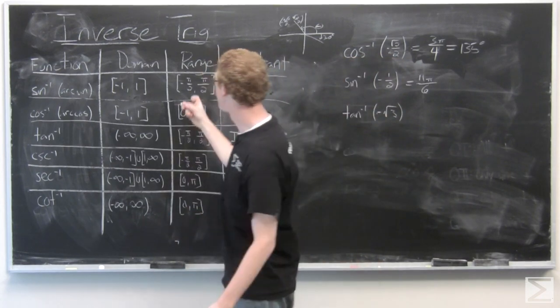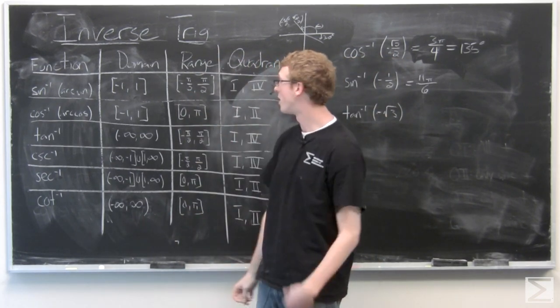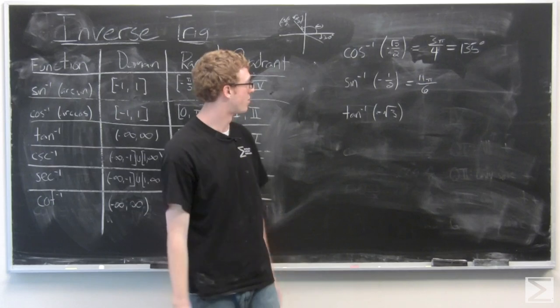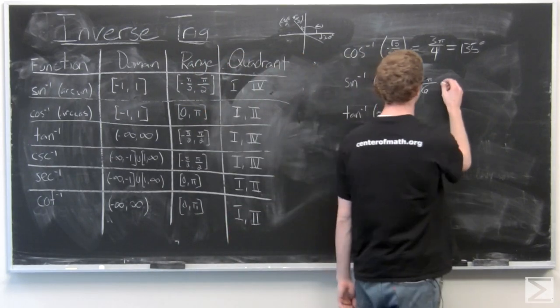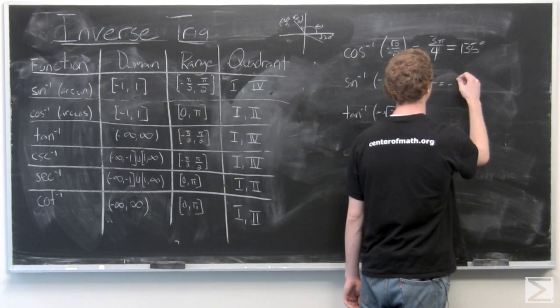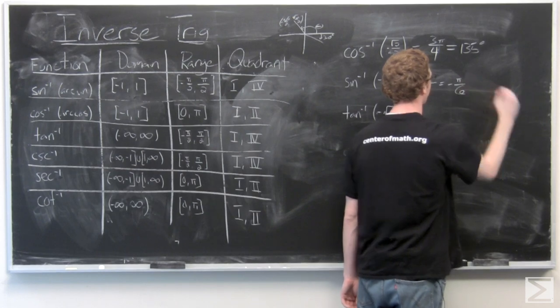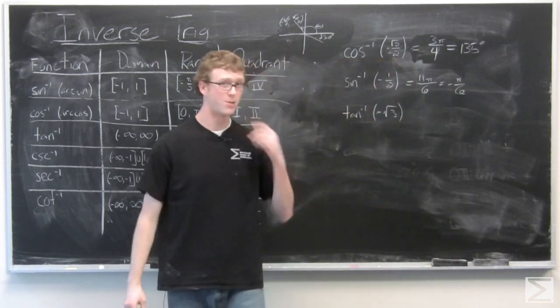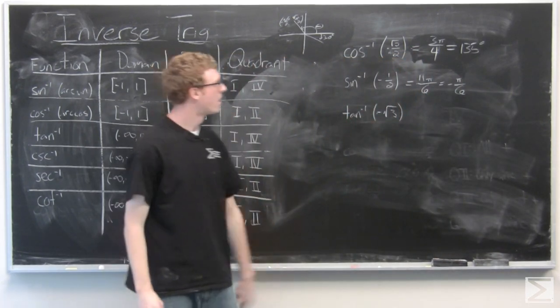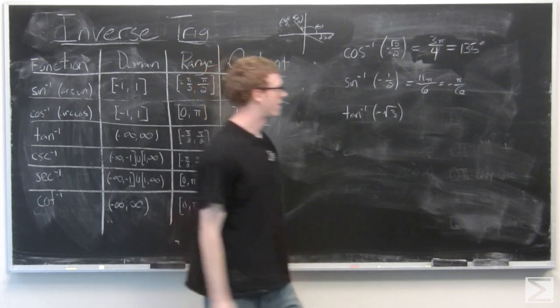But again, because our range is negative π/2 to π/2, we need to go ahead and subtract 2π from that. And that's going to leave us with negative π/6, which is negative 30 degrees.